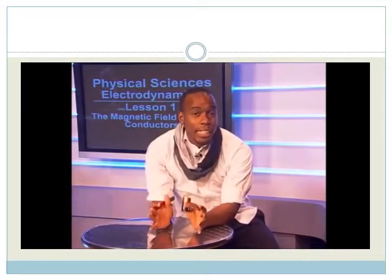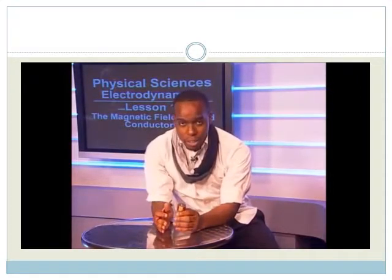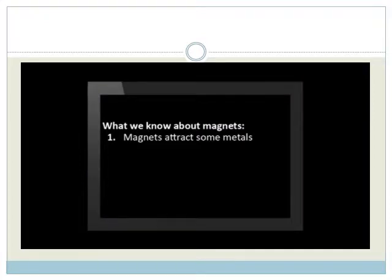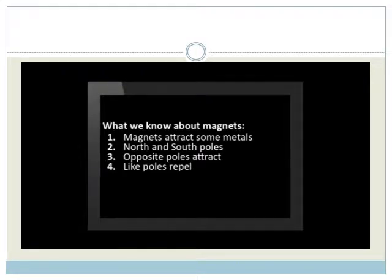First, let's look at what we know about magnets. Magnets attract some metals. They have two opposite poles, a north and south pole. Opposite poles attract, and like poles repel one another.